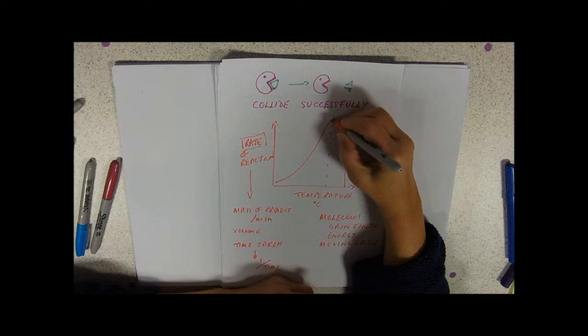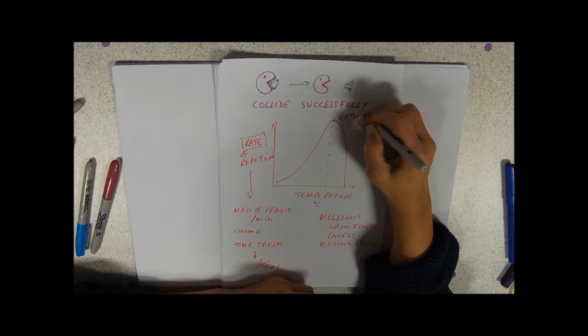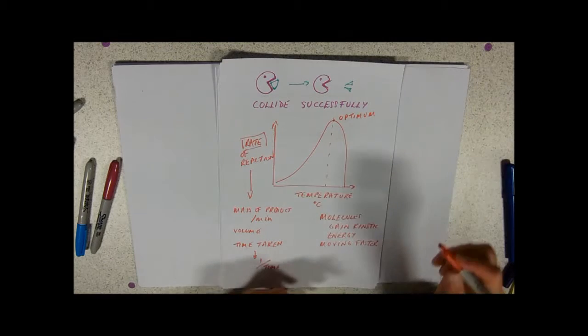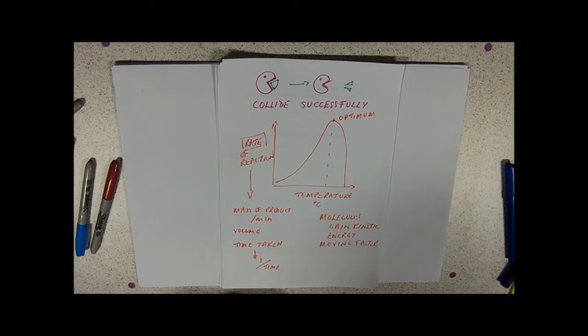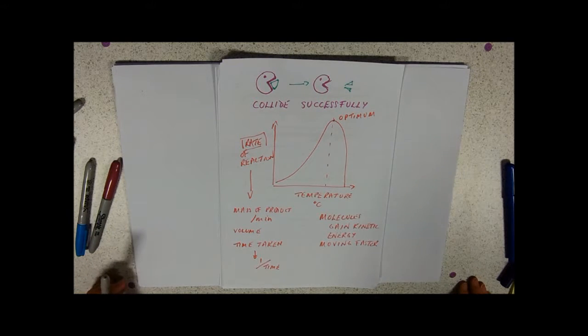This point at the top, the very peak of the graph, is called the optimum. Now for humans and for human pathogens, the optimum is around about body temperature of 37 degrees, but it isn't always that way.